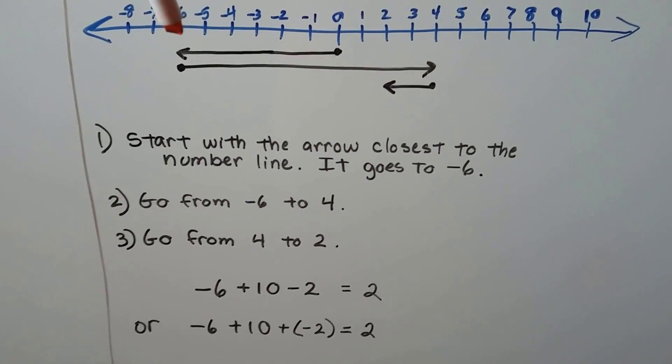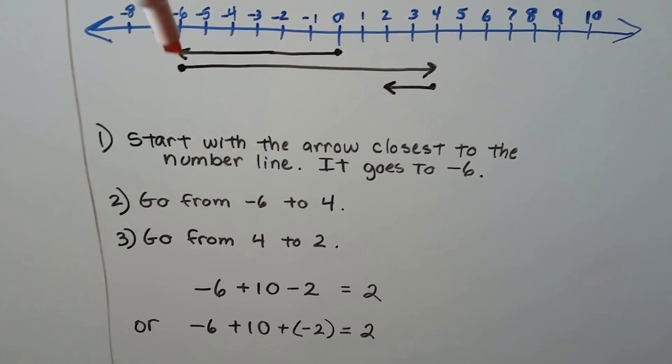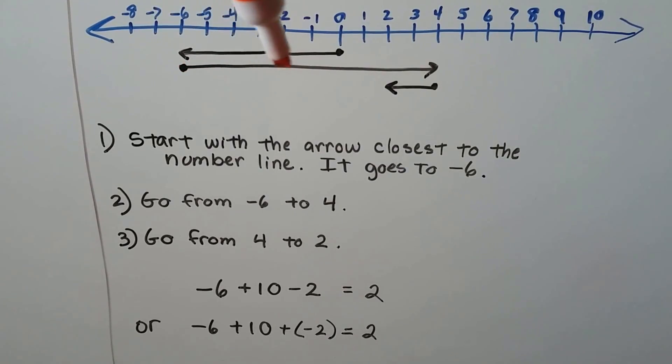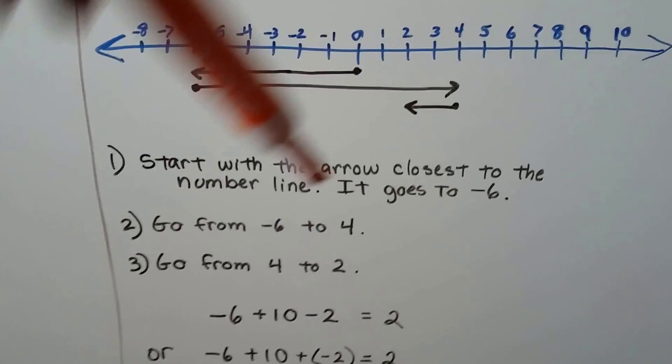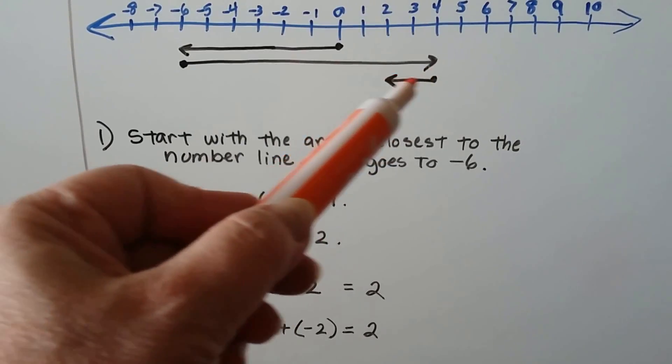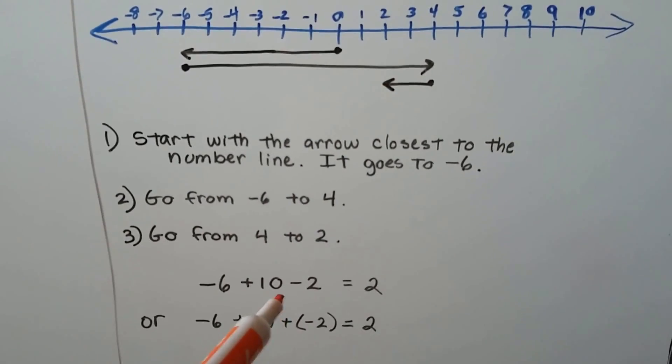We're going to go negative 6, and this is 1, 2, 3, 4, 5, 6, 7, 8, 9, 10 hops. So it's negative 6 plus 10, and then minus 2. It's going back again. Our answer is a positive 2. We also could have said negative 6 plus 10 plus a negative 2, couldn't we? We could have added a negative.